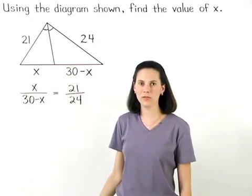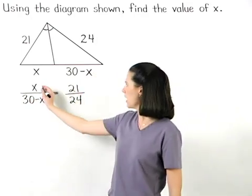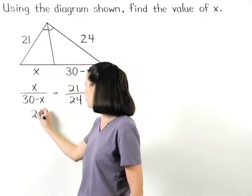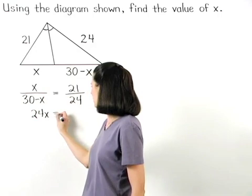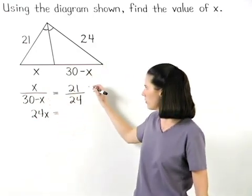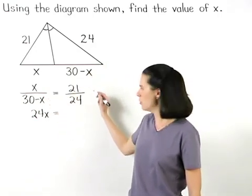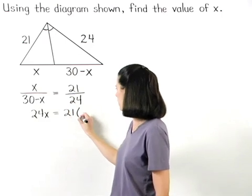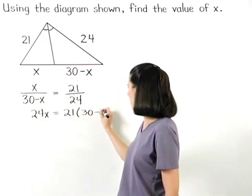Solving from here, we have 24x equals 21 times 30 minus x, or 21 parentheses 30 minus x.